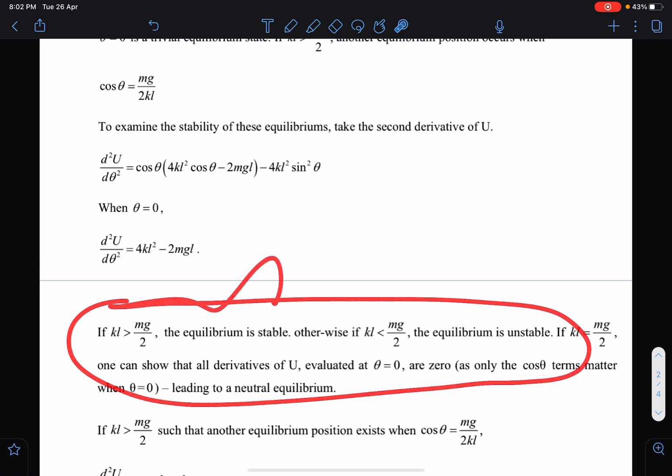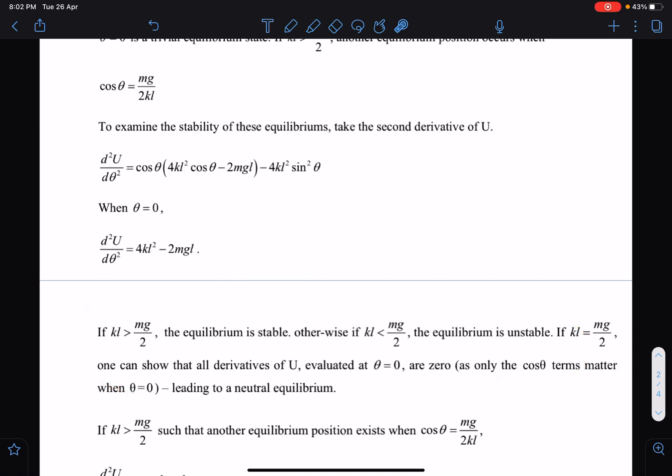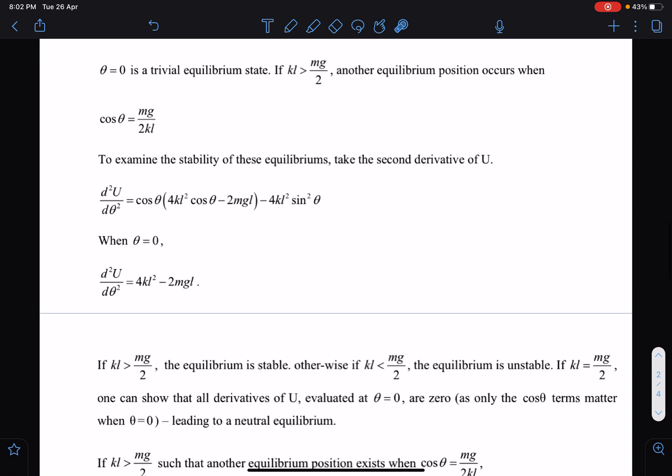So this entire thing I am writing for theta equal to 0 equilibrium position: 2kl greater than mg stable, 2kl less than mg unstable, and 2kl equal to mg is neutral.